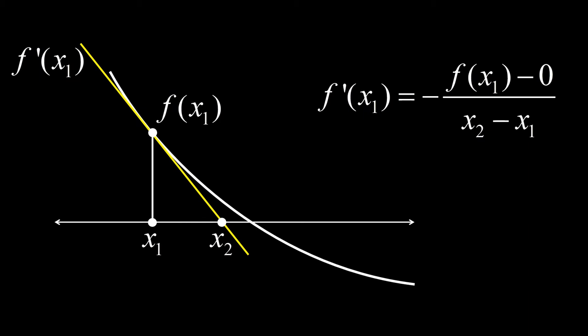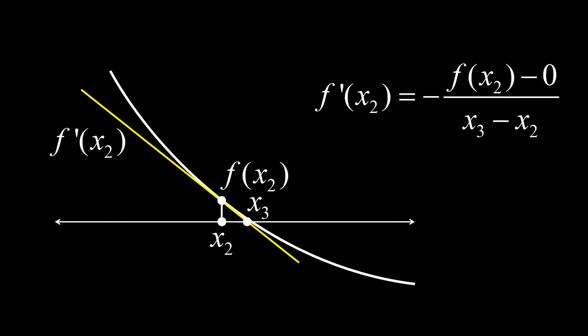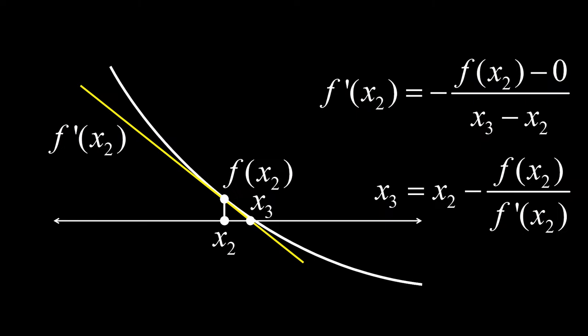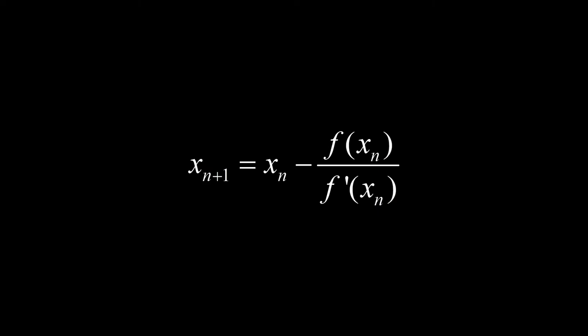Kapag alam na si x2, ulitin lang ang proseso. Komputen ang f of x2 at f' of x2. I-express ang derivative bilang rise over run at i-solve ang x3 na bagong hula or estimate kay xr. Pansinin na lumalapit ng lumalapit ang mga successive estimates kay xr. Therefore, ang equation natin para sa next estimate xn plus 1 given a current estimate xn ay ganito. Ito ang essence ng Newton-Raphson method.